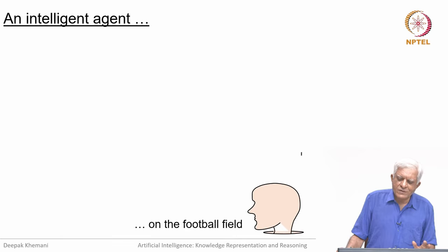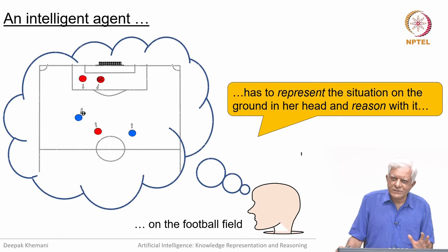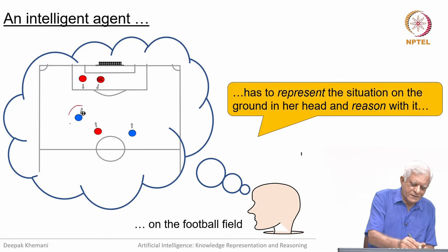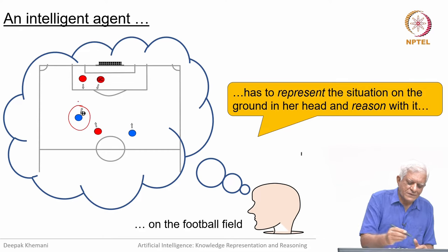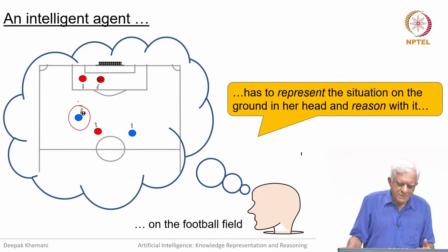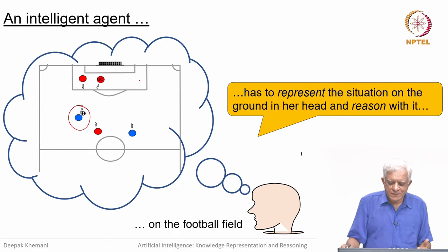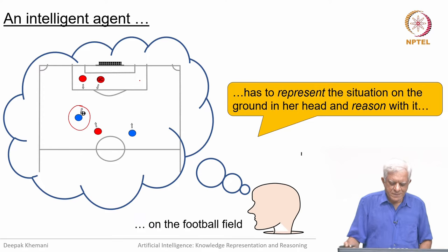Think of an intelligent agent on a football field. That player has to represent the situation she is in and reason with that situation. For example, if the player is running towards the goal but the opposing players are moving towards her — the opposing team is the red team — but her partner is also moving forward. What should she do? She has to be aware of the situation, reason about what is happening, and of course make her plans.